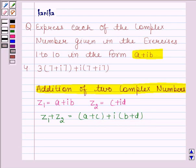For adding any two complex numbers, we will first add their real part and then their imaginary part.